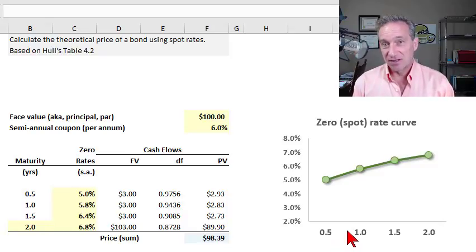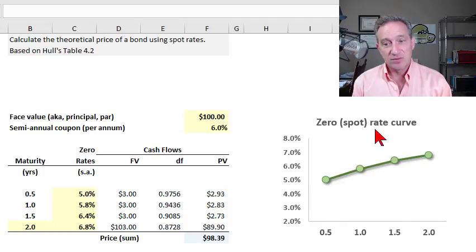I'd like to show how to calculate the theoretical price of a bond assuming a spot rate curve, this one right here. These are spot rates, or we could call them zero rates.